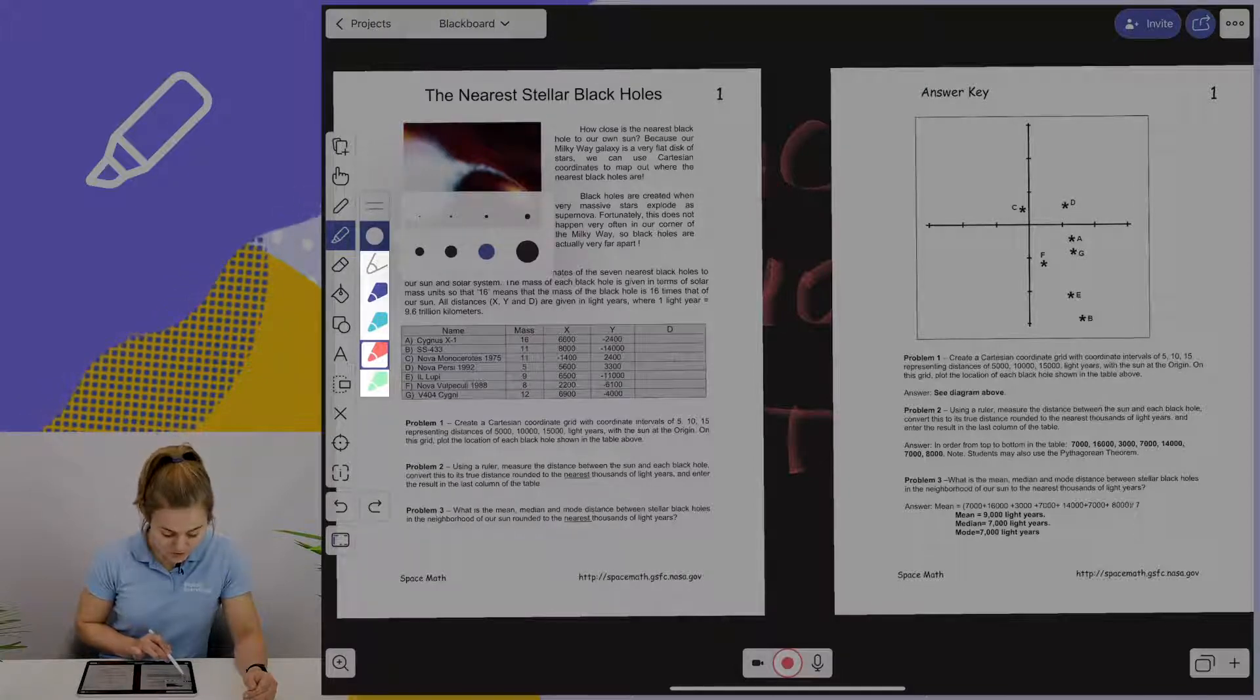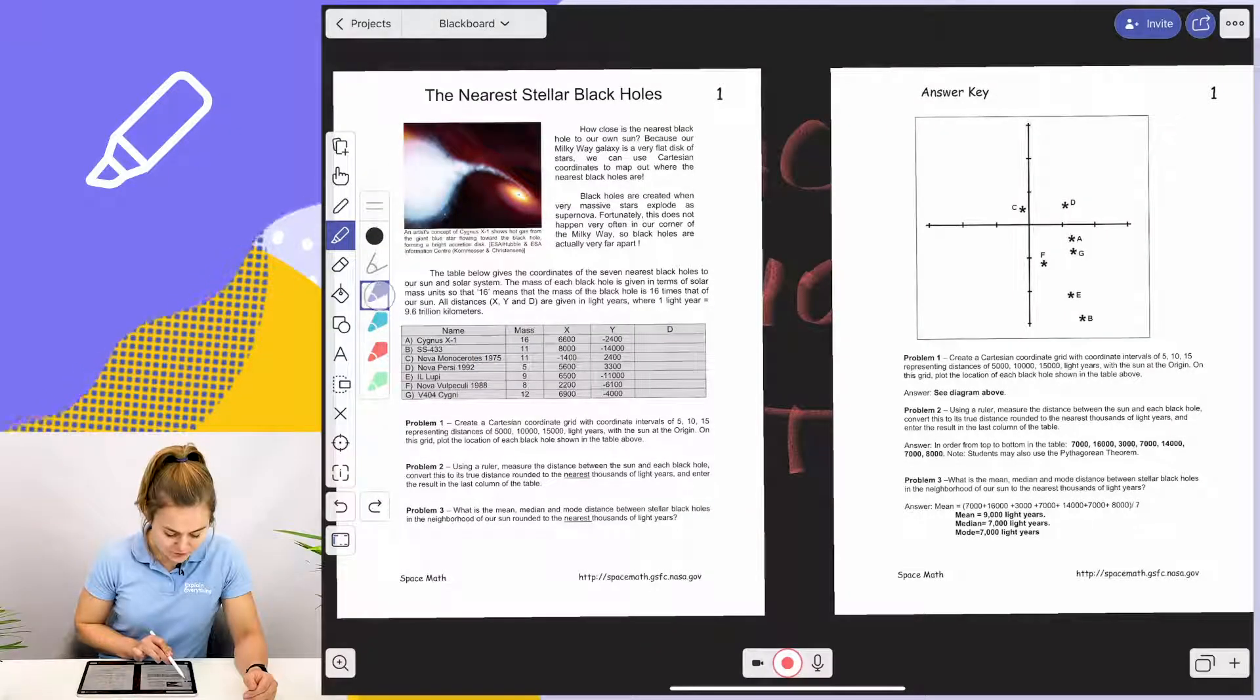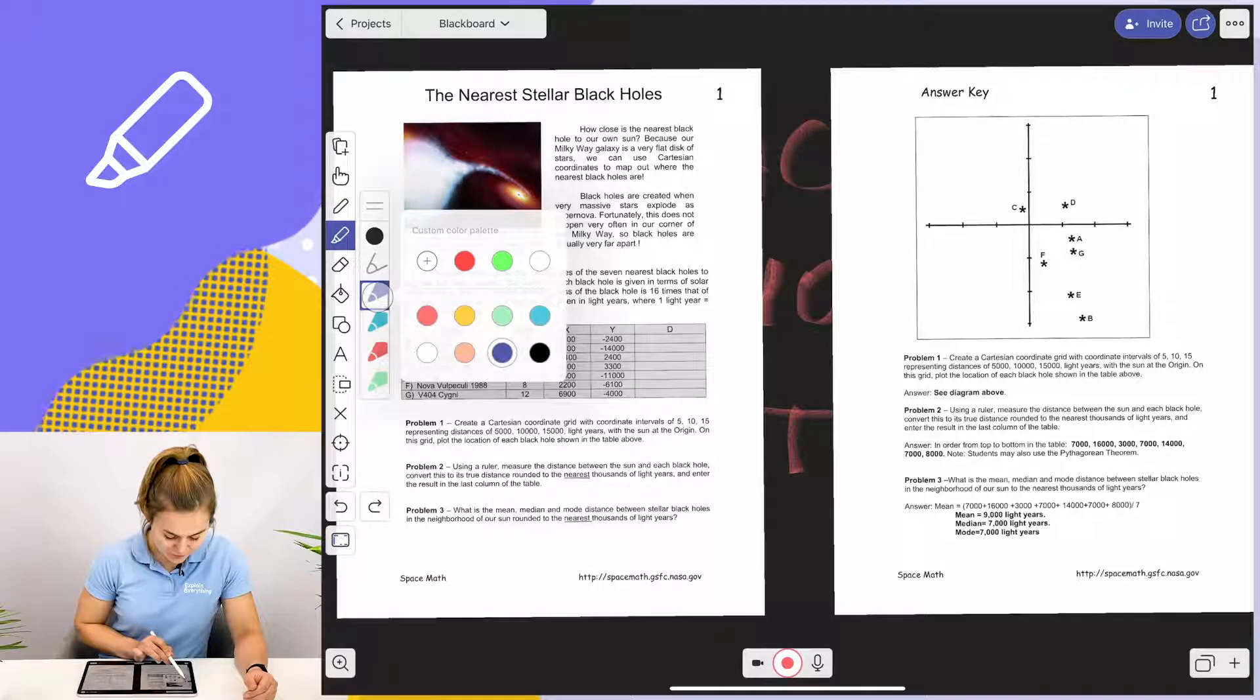If I want to use a different color, all I have to do is tap and hold, and a variety of different colors will appear.